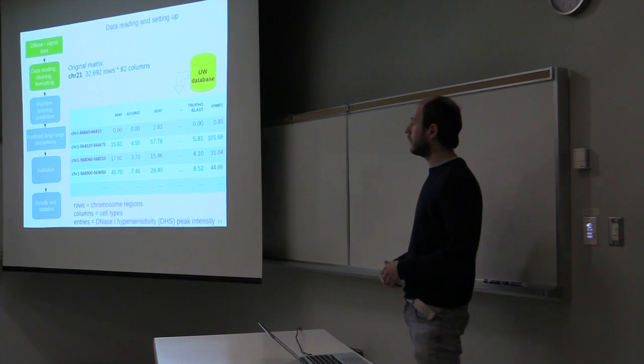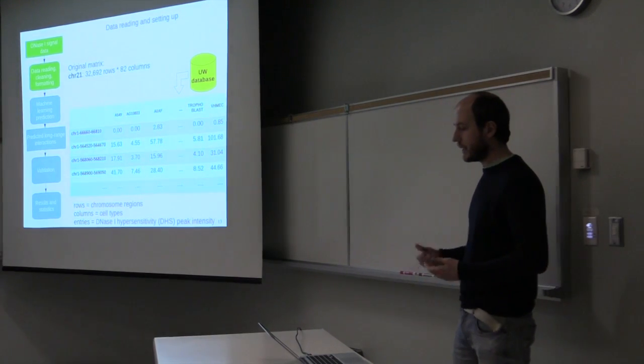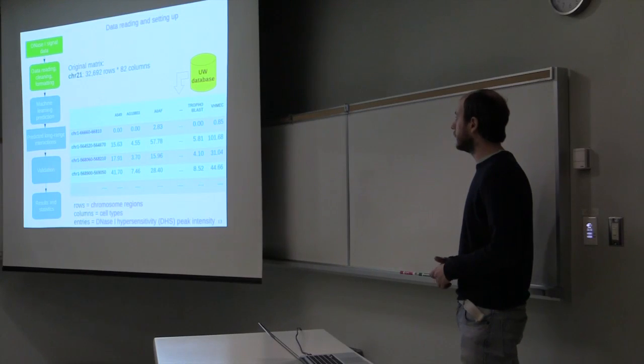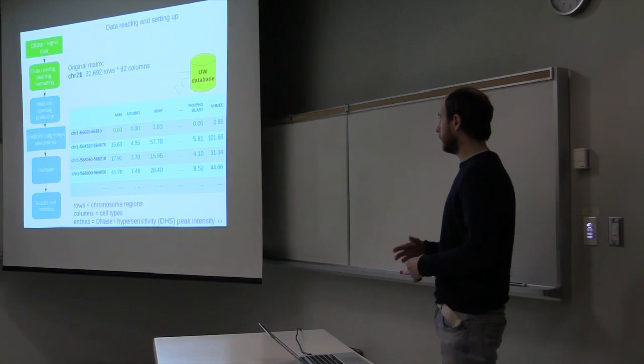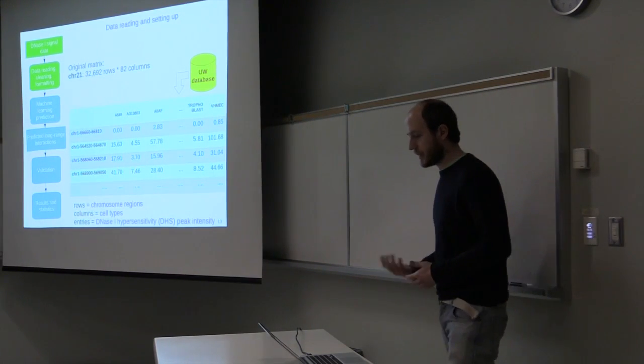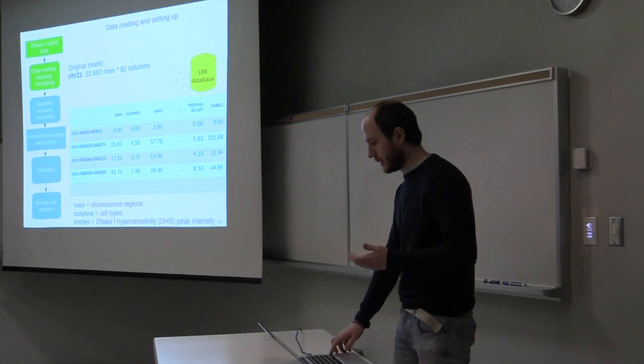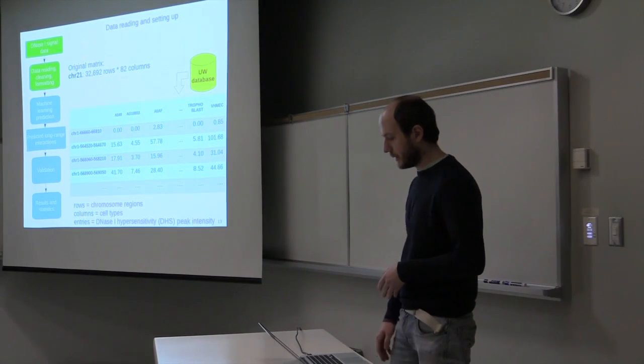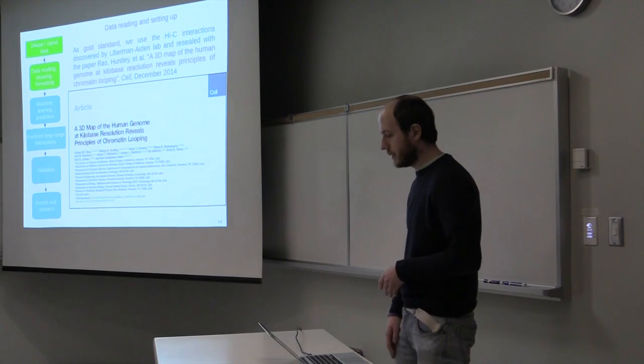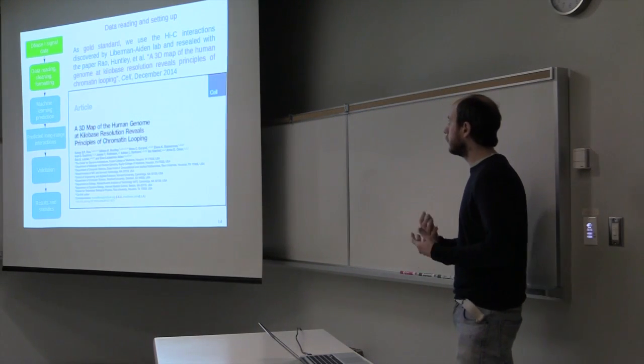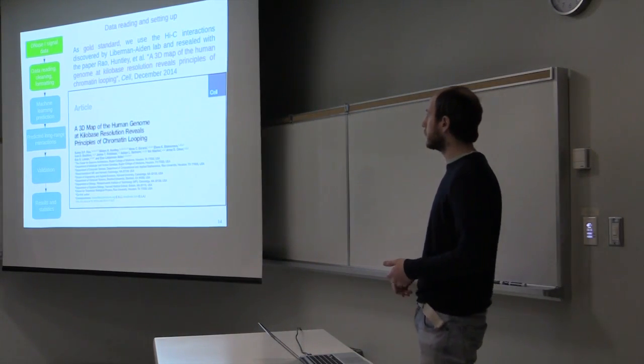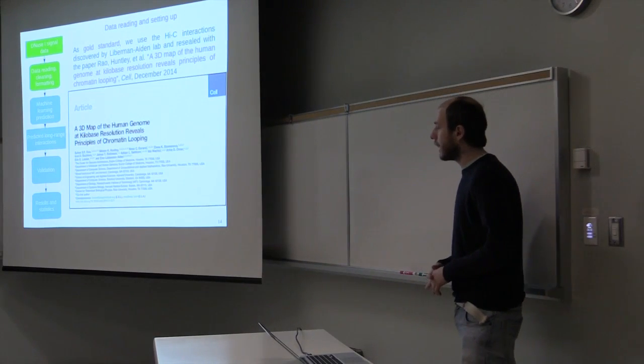Each content of this matrix is the DNase I hypersensitive site intensity that I just mentioned. Starting from this input matrix of DHS values, for the gold standard, we use the Hi-C interactions discovered by Lieberman-Aiden lab, released in 2014 as a validation set.